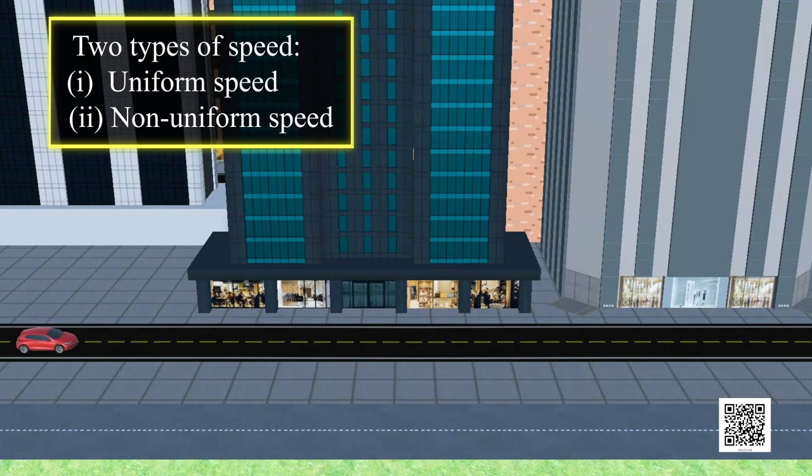There are two types of speed: 1. Uniform speed, and 2. Non-uniform speed.